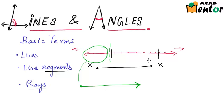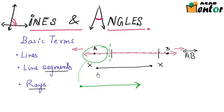Now let's look at how we name these figures. Take this line for example — I would take any two points on this line and name them, for example A and B. Then this line can be represented as line AB, and above this representation I would make a symbol of a line which shows that it is extendable in both directions. A line segment would have two end points, for example points P and Q, so I would name it as line segment PQ.